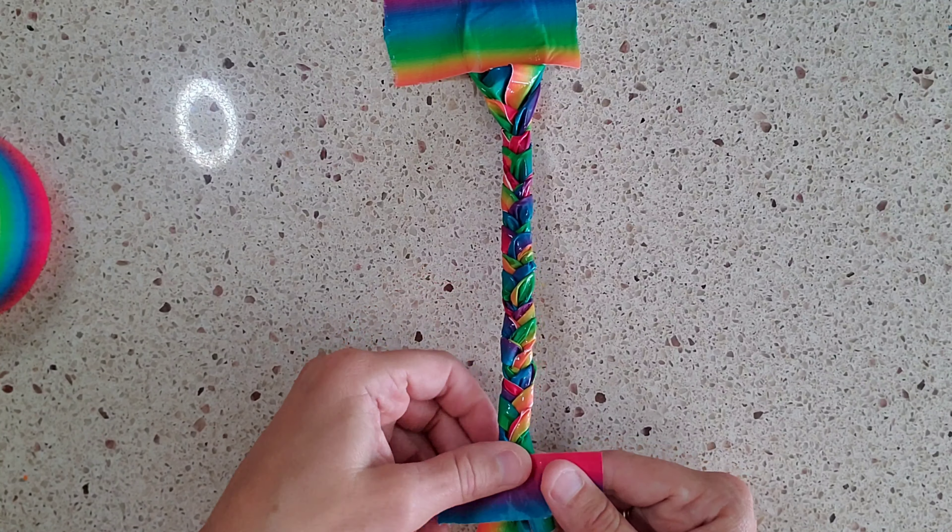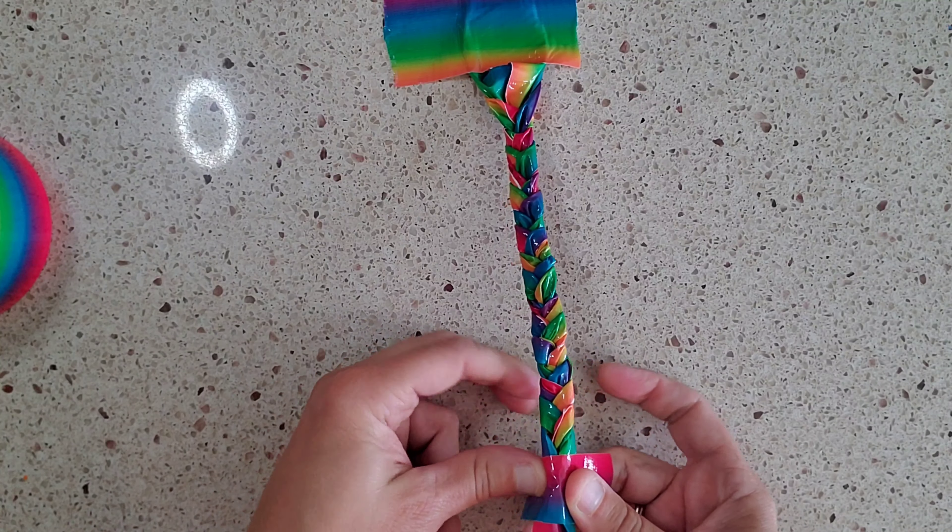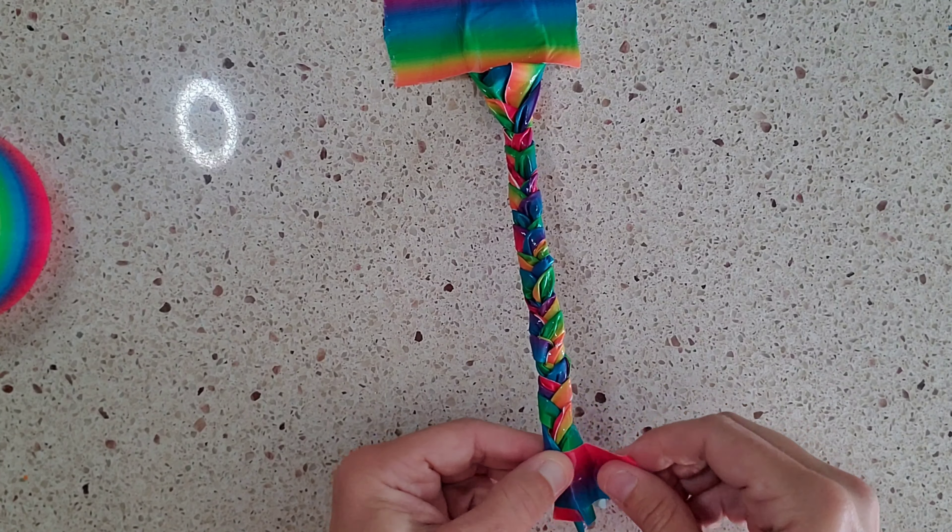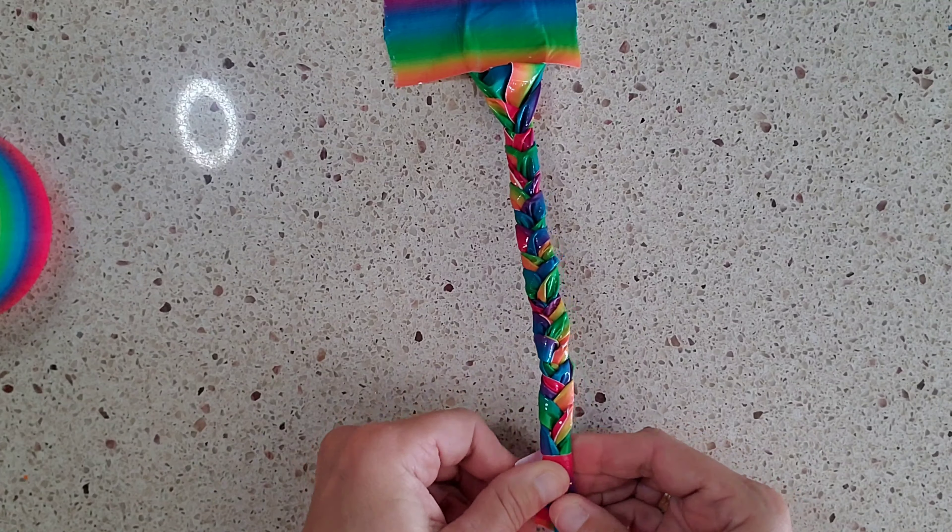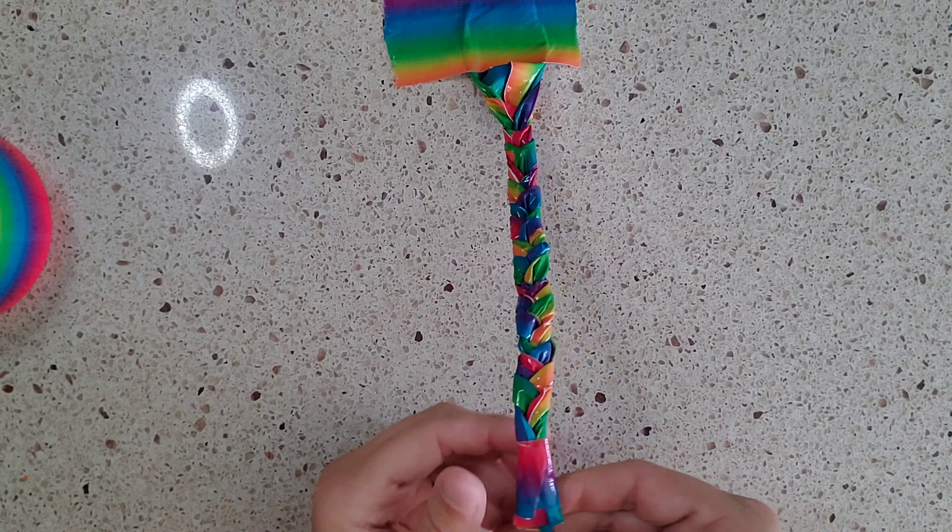And you are just going to put a piece down and then you are going to wrap it around and then that will hold that braid together just like that.